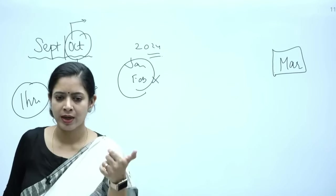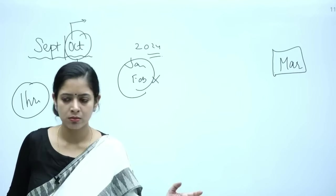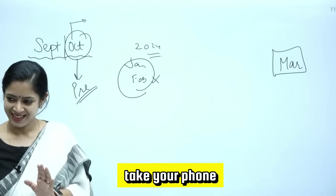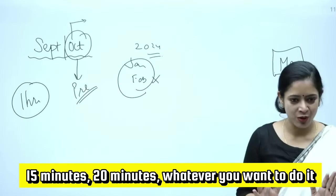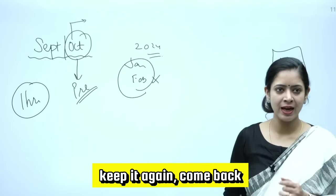One hour timer, phone rakha, timer on kiya, padhai pe baithe. Ek ghanta ho gaya, timer baja. Go to the almira, take your phone. 15 minutes, 20 minutes, whatever you want to do with your phone, do. Then keep it again, come back.